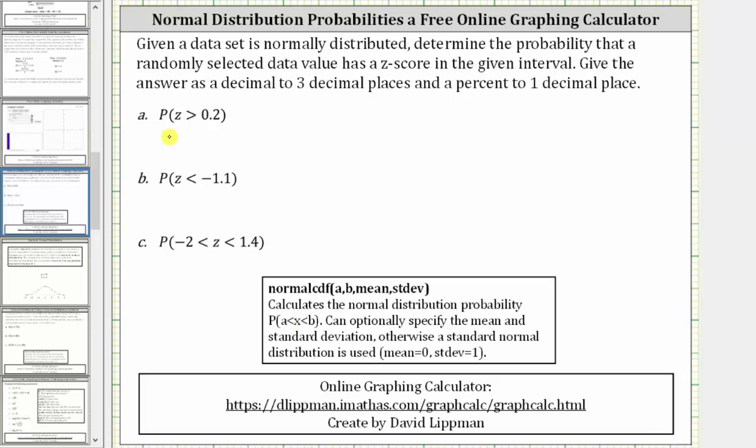First we want to find the probability that z is greater than 0.2. So 0.2 is going to be the value of a. For b, the upper bound, we'll have to exaggerate some large positive value. So let's go to our free online graphing calculator, linked below.